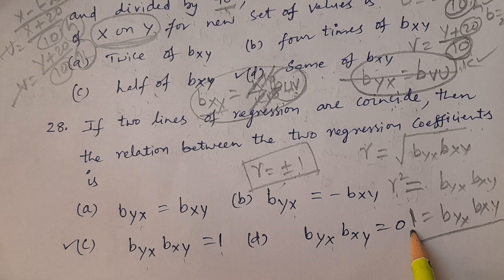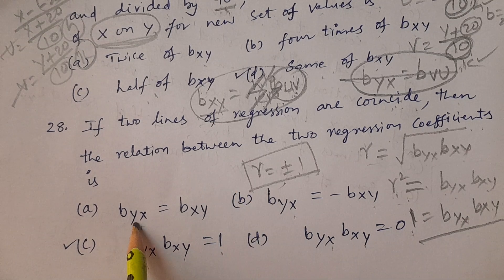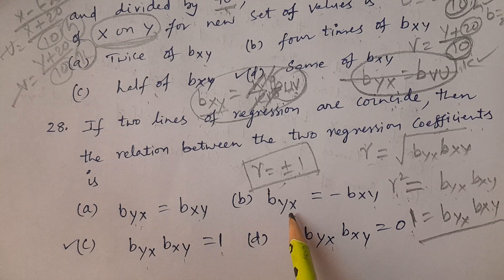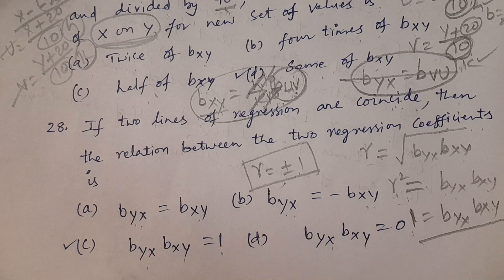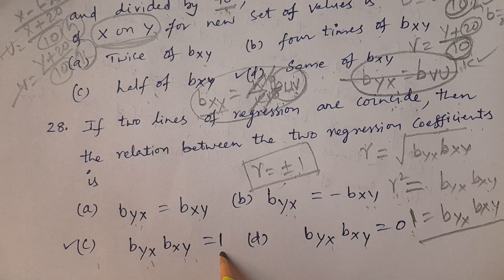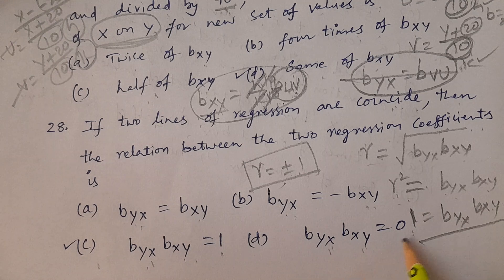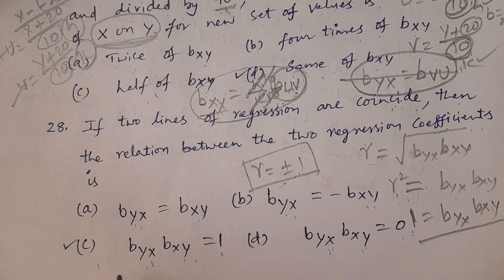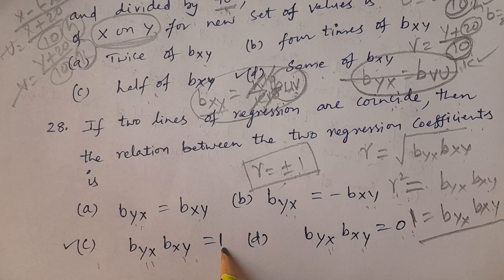Now you see the options: A — byx equals bxy; B — byx equals minus bxy; C — byx into bxy equals 1; D — byx into bxy equals 0. The answer is byx into bxy equals 1, option C.